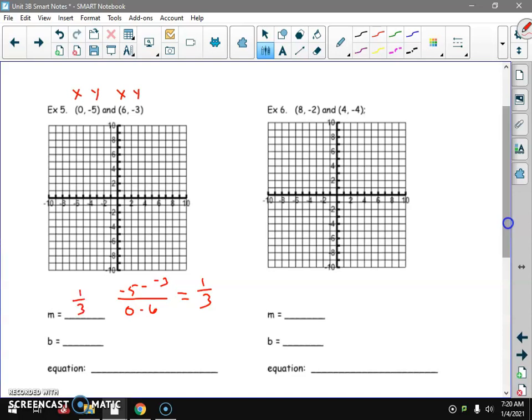The B again is where the X is 0, negative 5. I can plug it into my equation now. Y equals, M is 1 third, we get the X, and the B is minus 5. Now I can plot these two points. Draw the line. Let's do it.